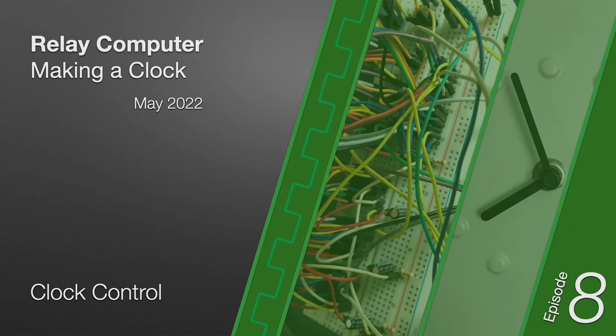This is the 8th episode in a series covering the design and construction of a clock for my relay computer. In the last episode, which was quite a while ago to be fair, I put together a breadboard prototype of my relay clock design and got it to produce a pretty rough clock signal.